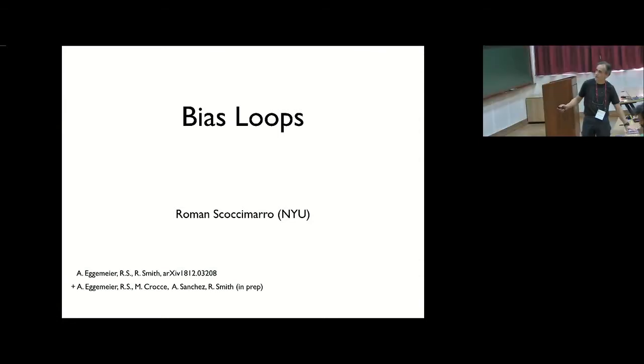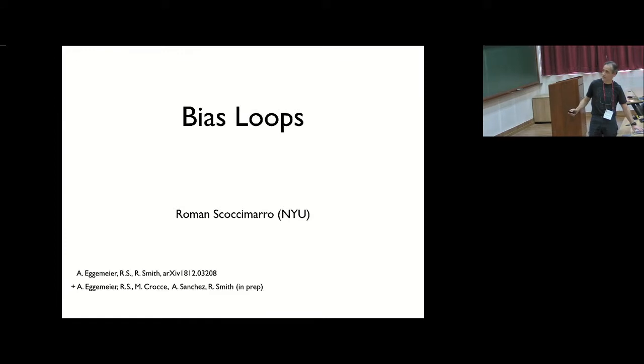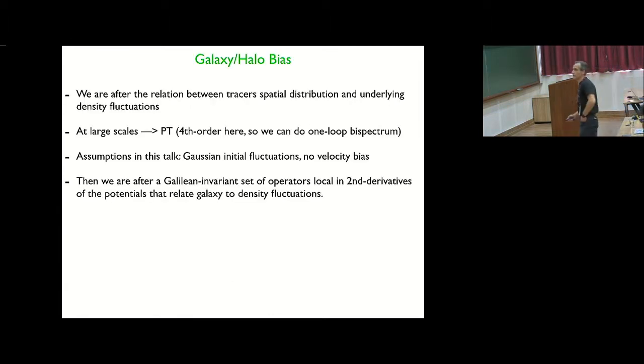So the subject is non-linear loops, non-linear corrections due to galaxy bias. And so what we are interested in here is the relationship between tracers such as galaxies and the underlying dark matter density fluctuations. We are interested in large scale so we can use perturbation theory.